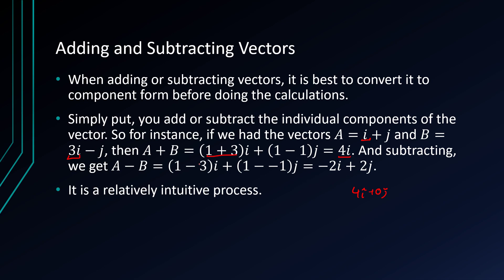And subtracting, we just do 1 minus 3, so that's minus 2. And 1 take away negative 1, which is plus 2. So the two negatives turn into a plus, and that's how we get a positive 2j. You can think of it like collecting like terms. And if you can think of it that way, it's a fairly intuitive process.